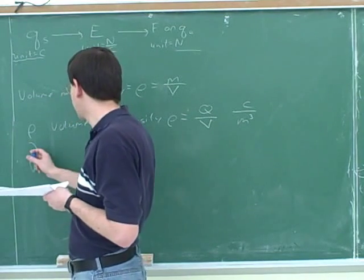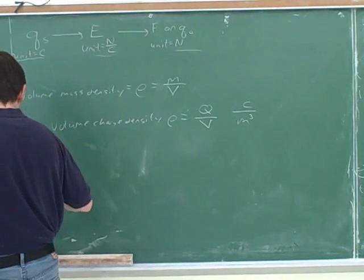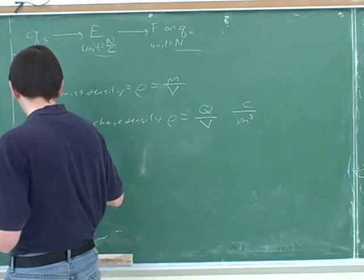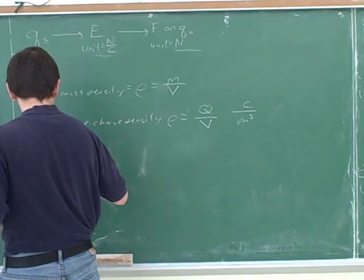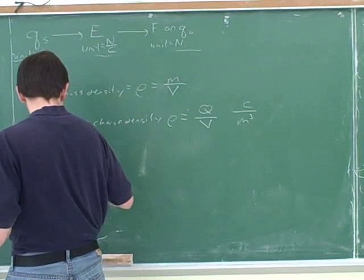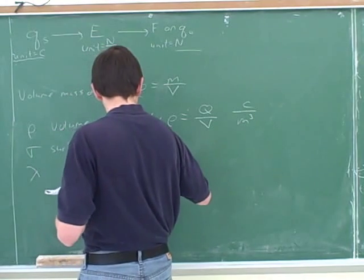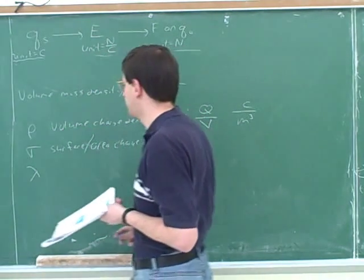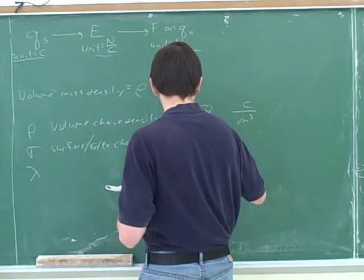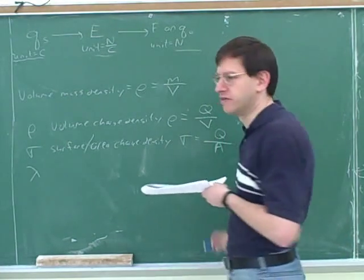Now, this lambda here stands for the linear charge density. Actually, why do I put these in this order? So here's sigma. This stands for the area charge density or surface area or surface charge density. Because sigma is the Greek letter for S, so for surface area. What do you think the formula would be for that? Q over A. Yeah. Q over A.